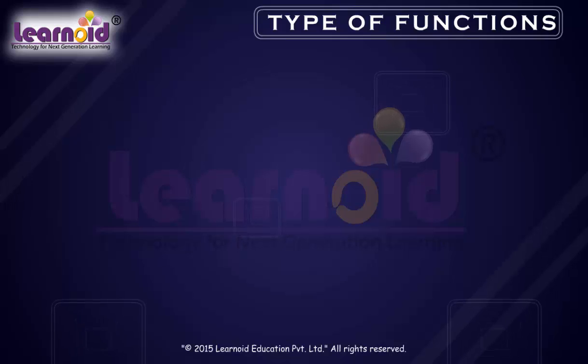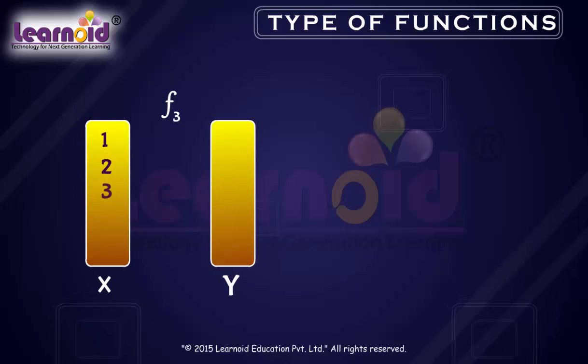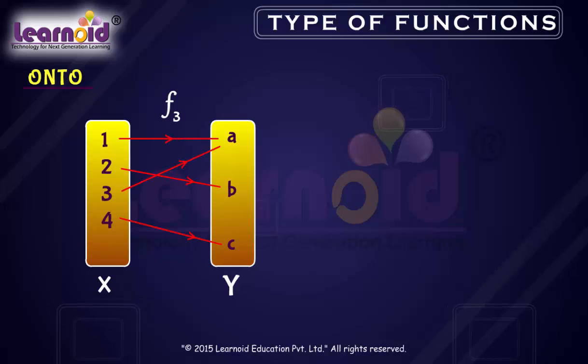A function f from X to Y is said to be onto if every element of Y is the image of some element of X under f. All elements of Y are images of some elements in X. No element in Y is left. It is also called surjective.